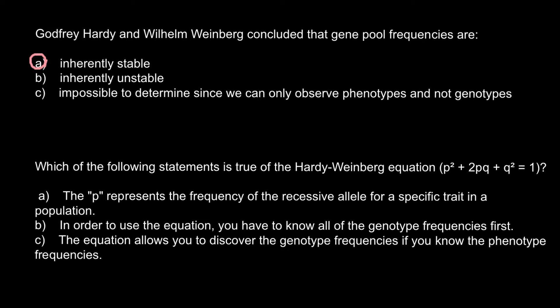Let's consider the first answer. Actually, p² stands for the homozygous dominant genotype. For example, if we have in our gene pool two alleles — dominant allele A and recessive allele a — then p² stands for the homozygous dominant variant, 2pq stands for the heterozygous genotype, and q² stands for the homozygous recessive genotype.